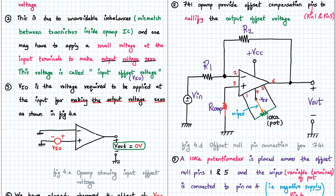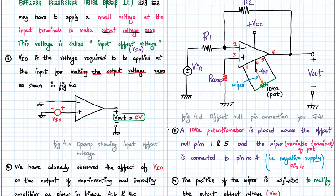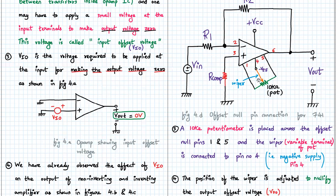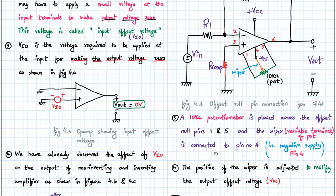So here you remember we have already incorporated the RCOM register over here. Now hence, for whatever designs you do, in fact in the previous circuit also you can add RCOM register in all of your circuits. It will be a parallel combination of R1 and R2. Now, pin number 1 and 5 are called offset null in op-amp, and we are using this for the first time. A 10 kilohm potentiometer is placed across the offset null pins 1 and 5, and the wiper, the variable terminal of the pot, is connected to pin number 4, the negative supply voltage. The position of the wiper is adjusted in such a way that the output offset voltage VOO is absolutely 0 volts.